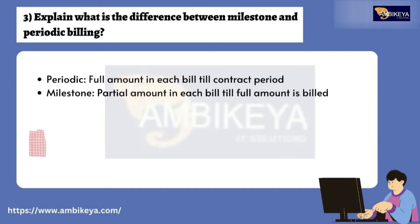Question number three: Explain the difference between milestone and periodic billing. Periodic billing means the full amount is billed in each billing cycle until the end of the contract period. Milestone billing means a partial amount is billed in each cycle until the full amount is billed.